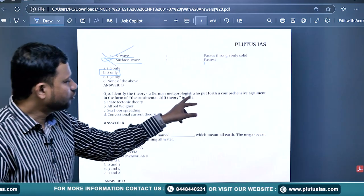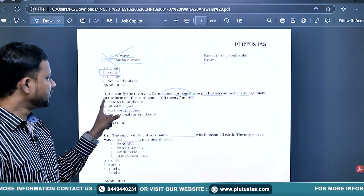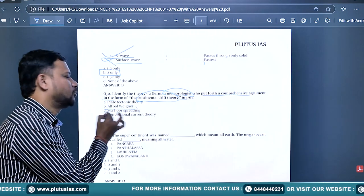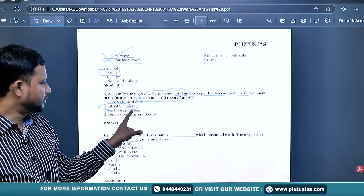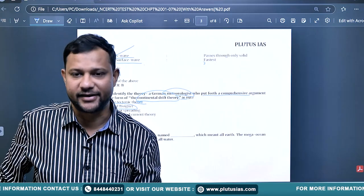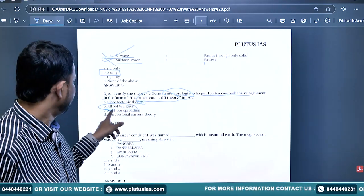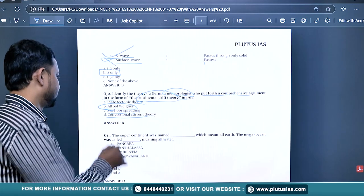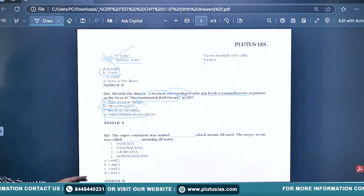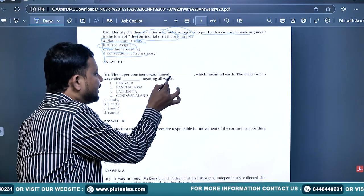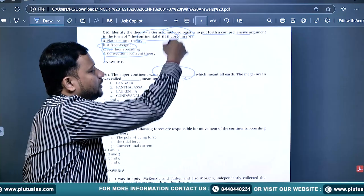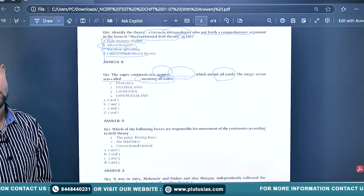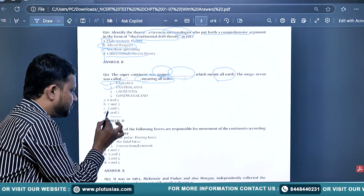Identify the theory: A German meteorologist put forth a comprehensive argument in the form of continental drift theory in 1912. It is asking for the name of the scholar - Alfred Wegener. He proposed continental drift. Plate tectonic theory was proposed by Parker, Wilson, and many scientists. Seafloor spreading by Harry Hess, and convectional current theory by Arthur Holmes. The supercontinent was named Pangaea, meaning all Earth or pan Earth, and the mega ocean was called Panthalassa, meaning all water.